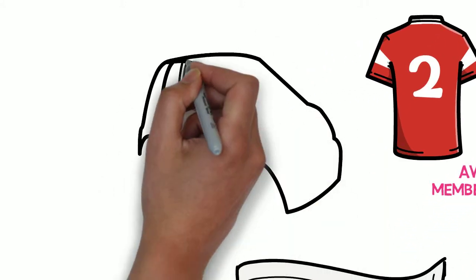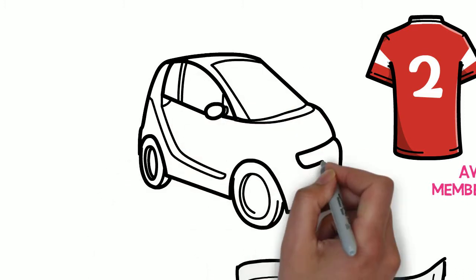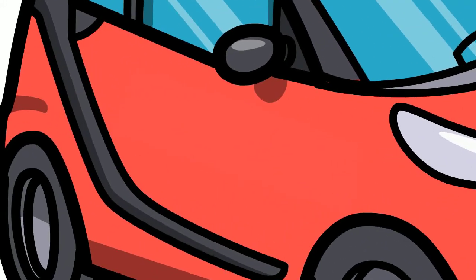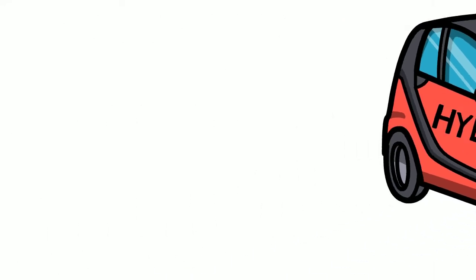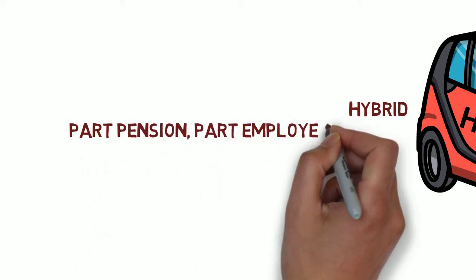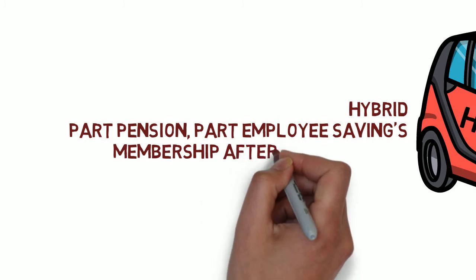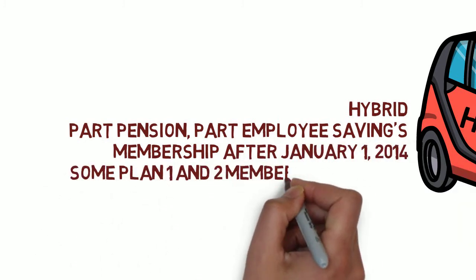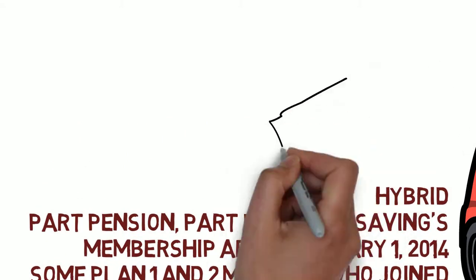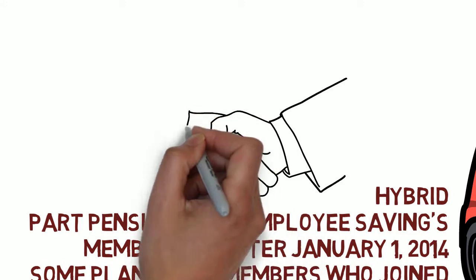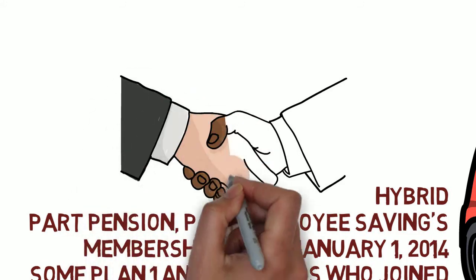The third group is the hybrid retirement plan, and this combines the features of the defined benefit plan and your contribution plan. The plan applies to most members hired on or after January 1, 2014, and some VRS Plan 1 and Plan 2 members may have opted to join into the hybrid plan. So the hybrid plan is basically part of your retirement will be from a pension sponsored by the state, and part of your retirement comes from the amount that you've contributed over the years.